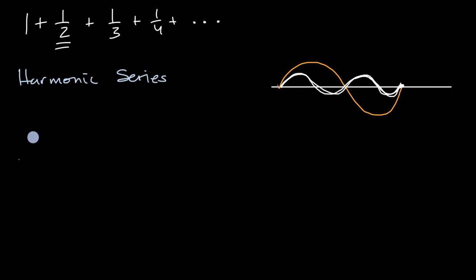So if we were to write it in sigma form, we would write it like this: we're going from n equals one to infinity of one over n.